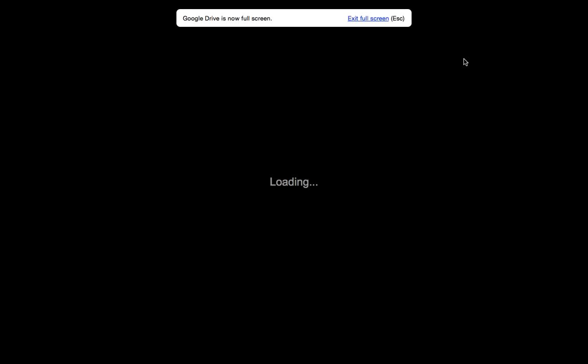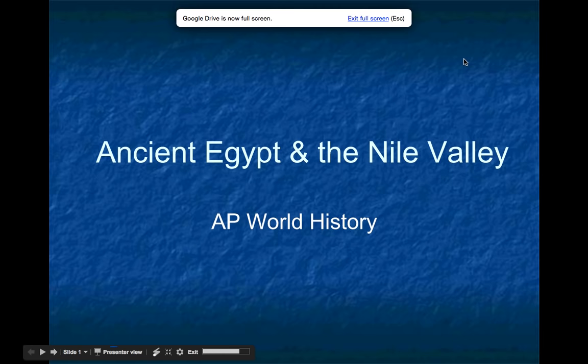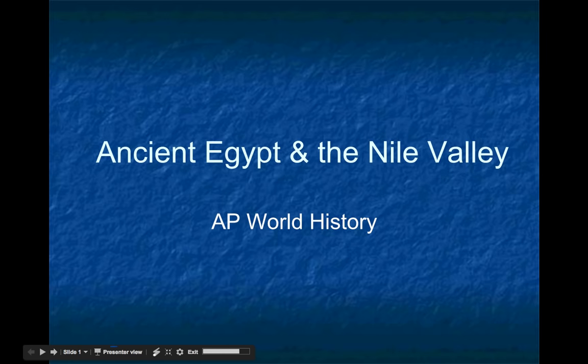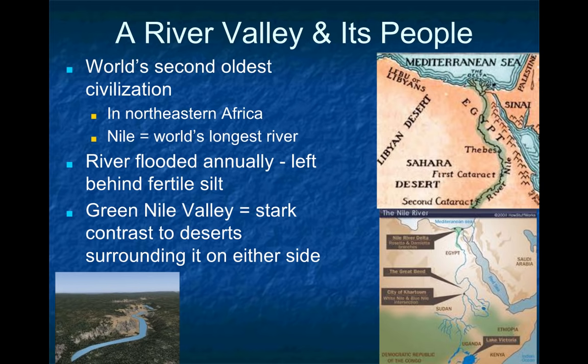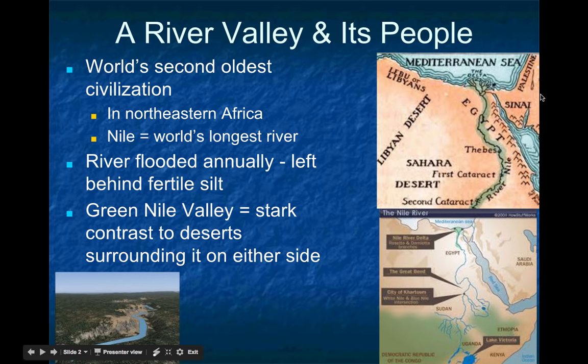Ancient Egypt — we're in Period 1 for AP World History. We've already talked about Mesopotamia, and I wanted to make a comparison first. We know that Mesopotamia was the oldest civilization, and Egypt comes in a close second, developing for many similar reasons. One of the major patterns in Period 1 is that the earliest civilizations in world history all developed around fertile river valleys, and Egypt is no exception.